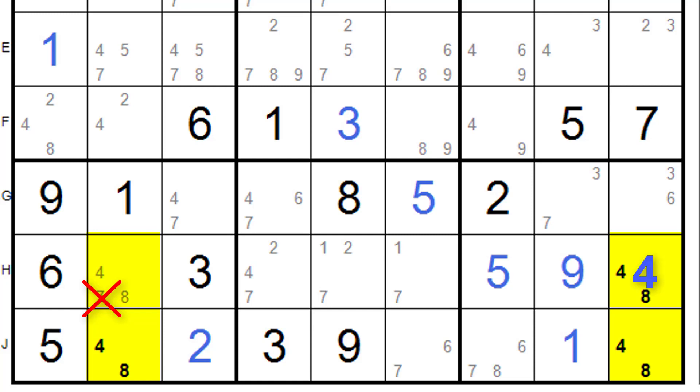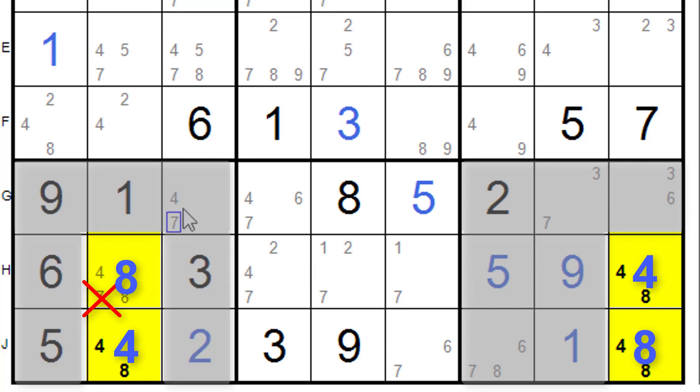And by doing that it means there's going to be an eight in H2, there's going to be a four in J2 and there's going to be an eight in J9. Now that means that in this house here there is a four and an eight. In this house there's a four and an eight so we can get rid of that four.